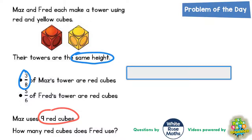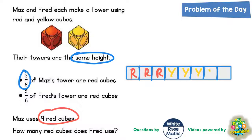Split it into two pieces first - halves - then split each half into two again, which will make quarters, and split each quarter in half again, and then we will have eight pieces - eighths. Now it does say 3 eighths of Maz's tower are red cubes, so 3 out of these 8 sections must be red. We'll write red on 3 of them, and since we're only using red and yellow cubes, the other 5 must be yellow.